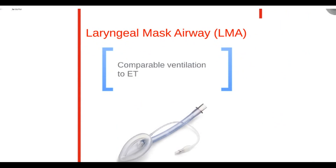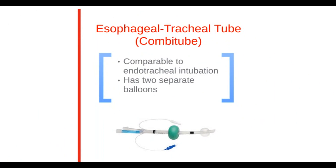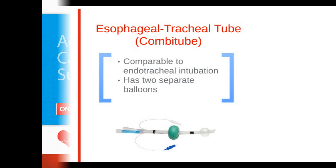Laryngeal mask airway is an advanced airway alternative to ET but provides comparable ventilation. The laryngeal tube is similar to the esophageal tracheal tube — it is more compact and less complicated to insert. This tube has only one larger balloon to inflate and can be inserted blindly. The esophageal tracheal tube, or COMBI tube, is an alternative to endotracheal intubation. It provides adequate ventilation comparable to an endotracheal tube and has two separate balloons.